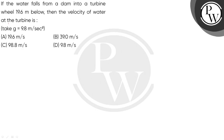Let's read the question: if water falls from a dam into a turbine built 19.6 meters below, then the velocity of water at the turbine is — okay, so water is falling from a dam into a turbine which is 19.6 meters below. Let's find what the velocity of the water at the turbine will be.